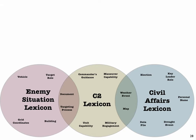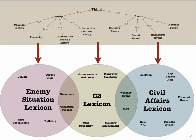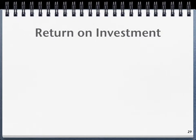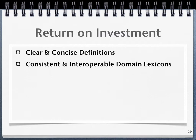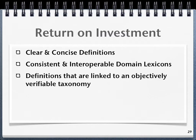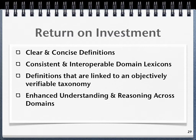Adherence to these ontological principles will result in the creation of domain lexicons or controlled vocabularies which are semantically consistent and interoperable with other domains. Extending from commonly defined categories of reality will prevent developers from creating highly idiosyncratic domain lexicons which are only helpful to one domain. The return on investment for creating consistent and interoperable domain semantics includes clear and concise definitions, consistent and interoperable domain semantics, definitions that are linked to an objectively verifiable taxonomy, enhanced understanding and reasoning across domains, and unity of effort across domains.